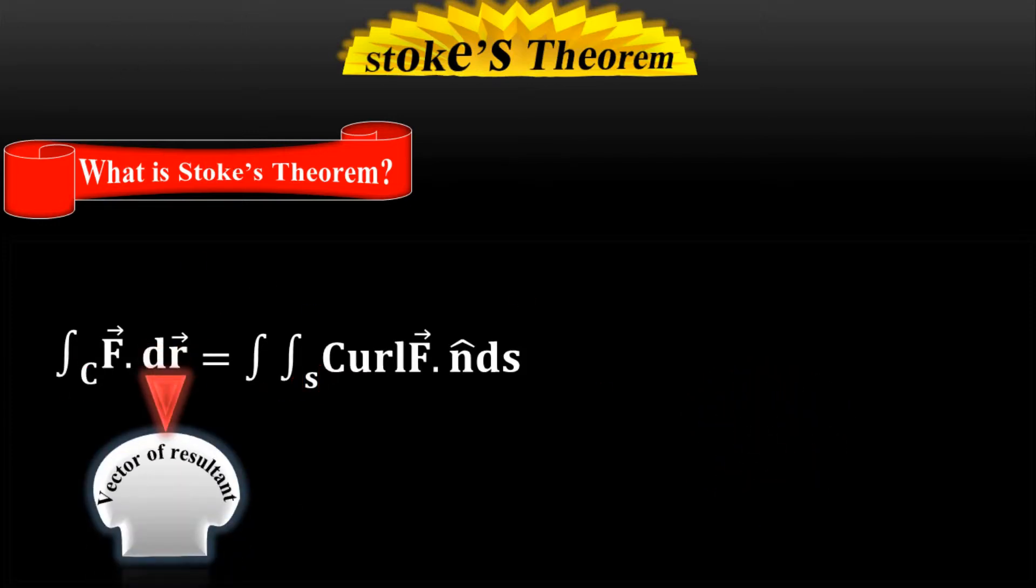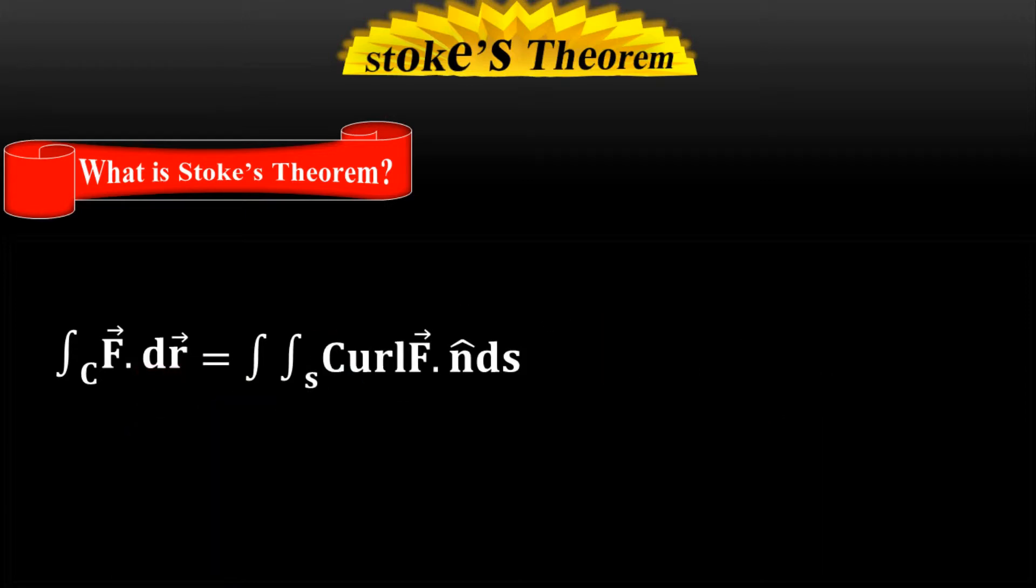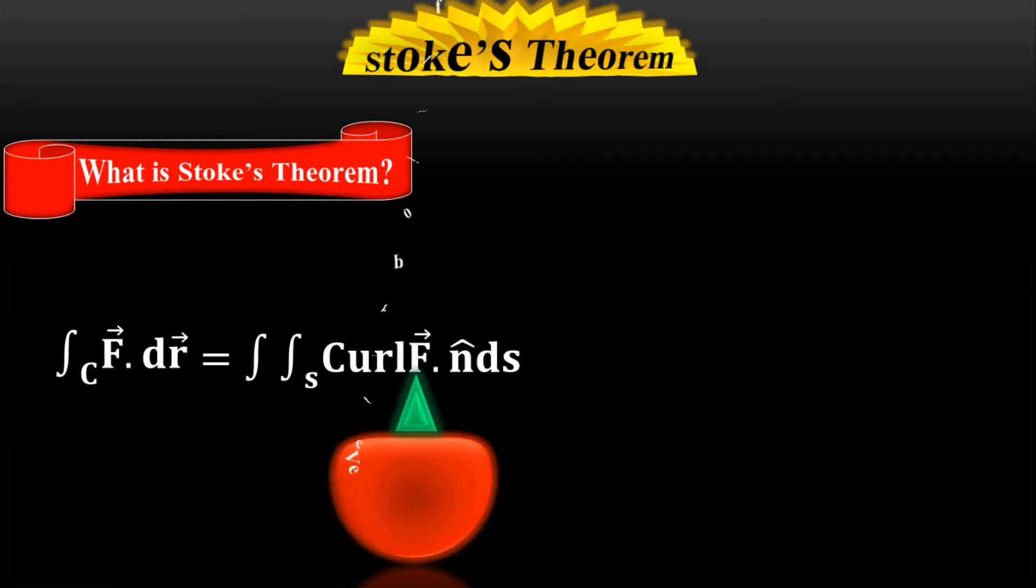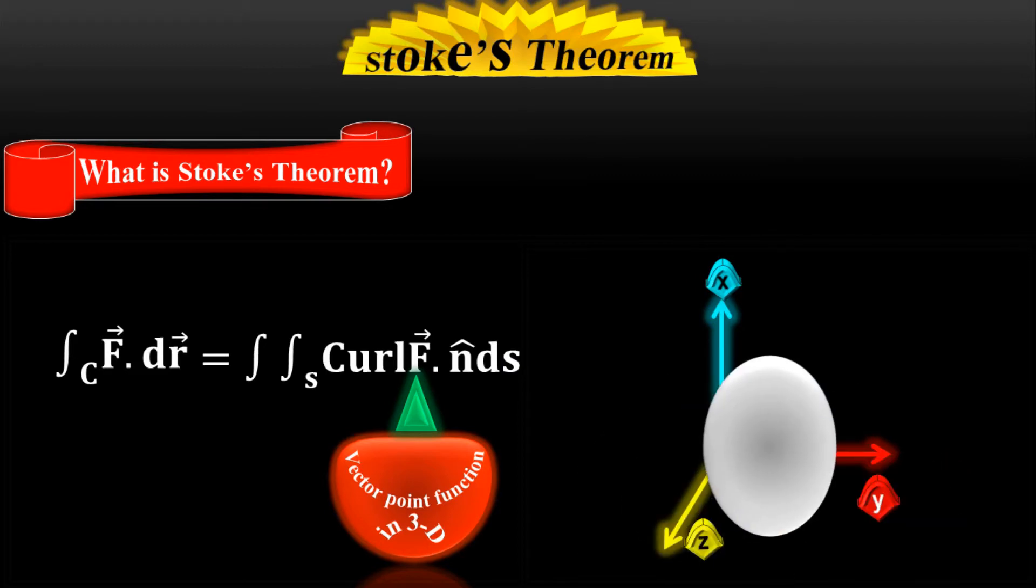dr is actually vector of resultant vector. Look to the object. It is actually the tangential vector of the resultant vectors on the curve of a body. At the right side, F is actually the vector point function. It's a vector in three dimensions. Let me take x, y, z plane. Let me take an object here. It is in three dimensions because it has coordinates in all the three x, y, z plane.